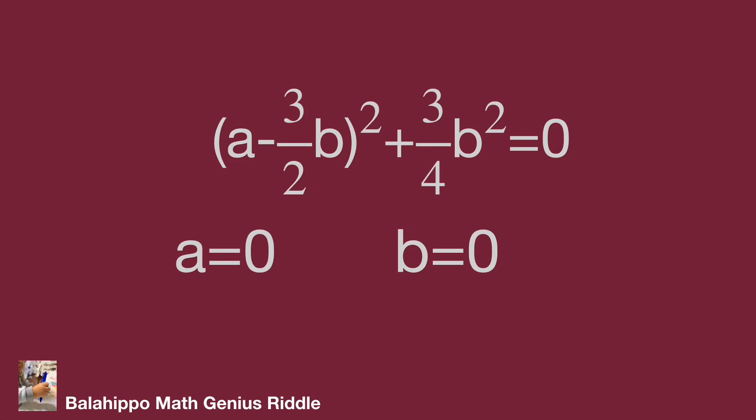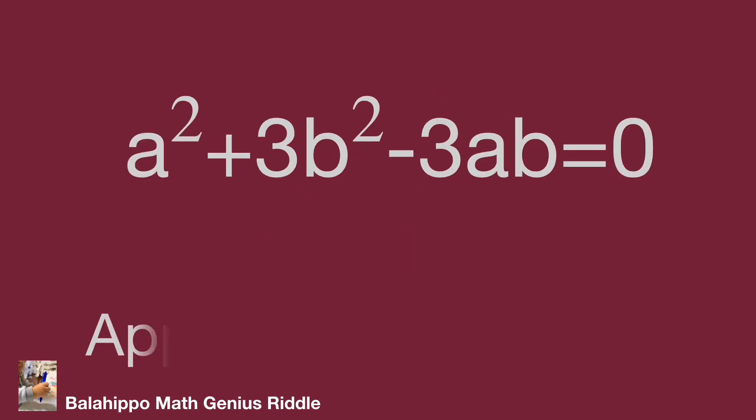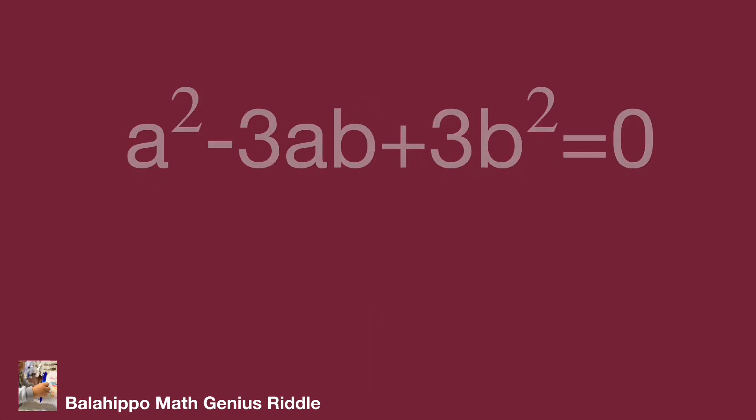After that, let's look at the second approach. Look at the equation as a² - 3ab + 3b² = 0. Treat a as unknown and b as a number.